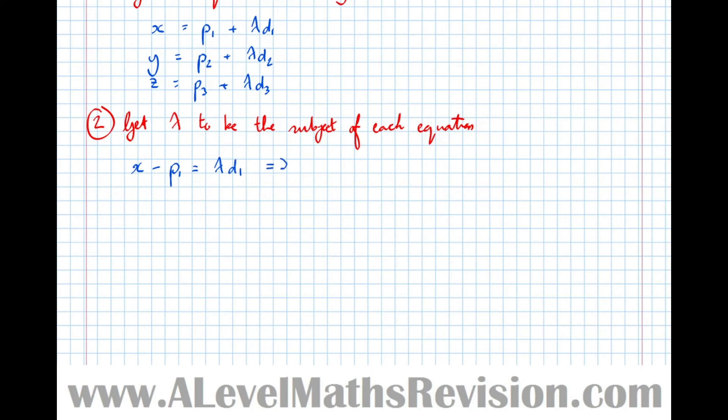Doing it for y, we get y minus p2 equals lambda d2, which means that lambda equals y minus p2 over d2.